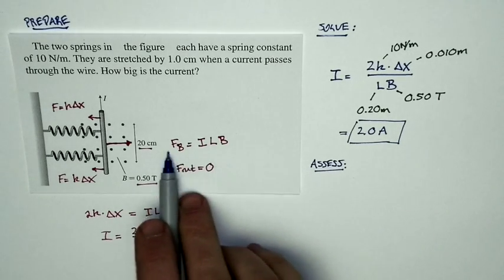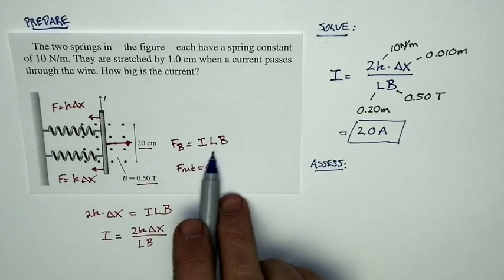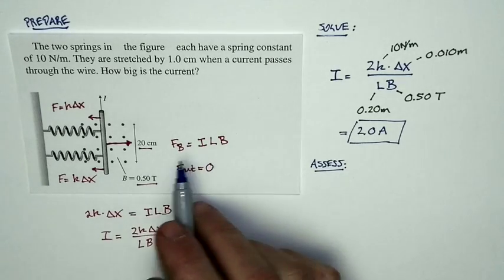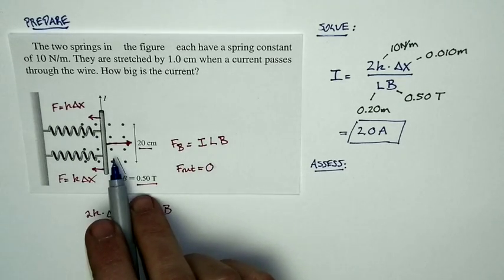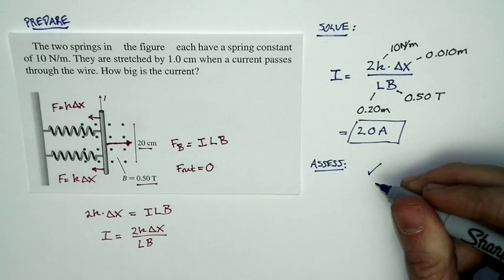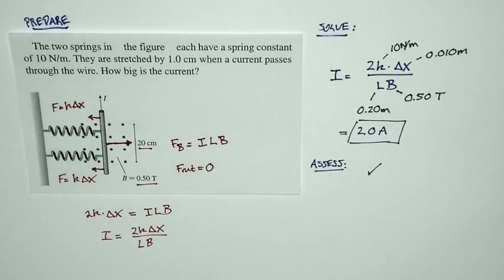And if a current of 2 amps is easily achievable, that produces a magnetic force that's on the order of, oh, a newton or so. I'm sorry, a tenth of a newton or so. And that's kind of comparable to what we're getting from the springs. And so all our magnitudes are matching up. And so the answer matches the way we know the world works.